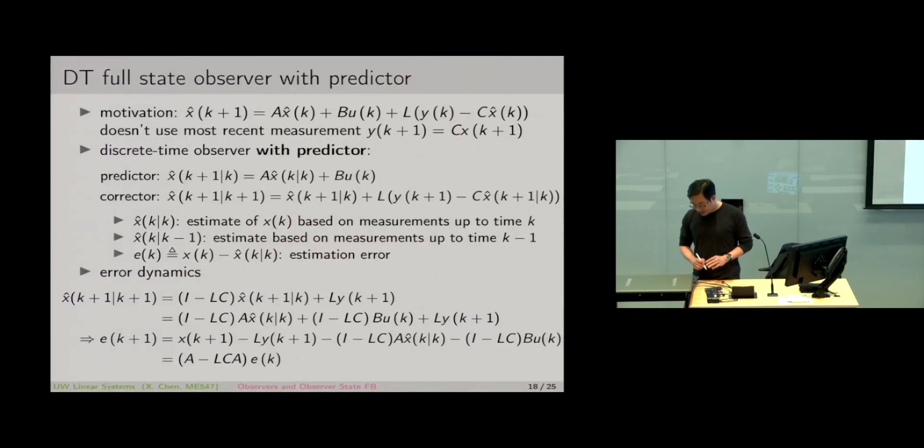Let's take a look at the error dynamics now. Consider the difference between X(K+1) and X hat(K+1|K+1), my best estimate using everything up to K+1. Let's combine, let's look at this one first. The X hat(K+1|K+1) using everything at K+1 equals this plus this, so we can combine this term and this term over here.